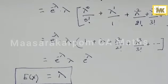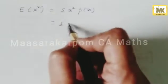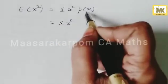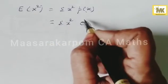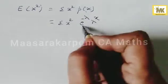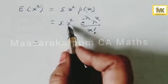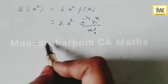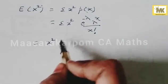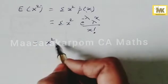Next, for variance, we first find the expectation of x squared. That is equal to sigma x² · e^{-λ} · λ^x / x!, which is the Poisson distribution probability function. For x squared, we use a technical grouping trick based on the expectation of x idea.